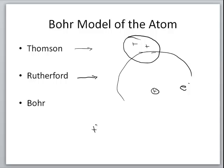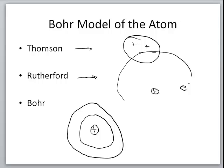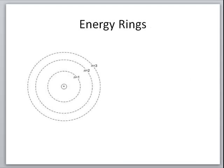What Bohr did was keep the nucleus at the center, but he put those electrons into energy levels, and those electrons were confined to those energy levels. So if you had an electron in the first energy level, it would move around the nucleus inside that energy level. Let's take a look at those energy levels and point out some significant components.